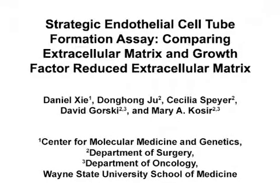The overall goal of this experiment is to quantify endothelial cell tube formation dependence on angiogenic chemokines using two different extracellular matrices that contain components which associate with various angiogenic molecules. This method can answer key questions in the cancer angiogenesis field, such as what is angiogenesis support by alternate pathways using alterations in the extracellular matrix. The main advantage of this technique is that it is quantifiable and uses fewer variables.